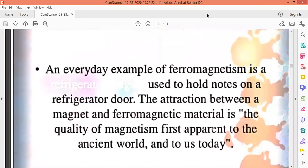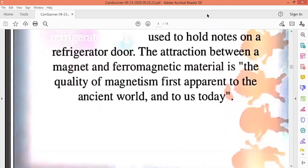An example of ferromagnetism is used to hold notes on a refrigerator door. So what we are doing in daily life, many people have some work. The person who is not at home will make notes and stick them on the fridge. That is the property of ferromagnetism. The quality of magnetism first apparent to the ancient world and to us today. This is the quote we have written here.